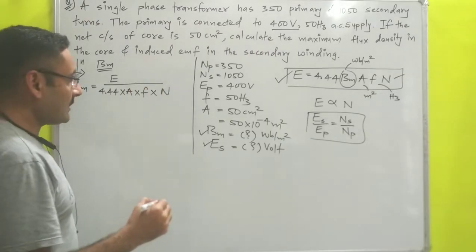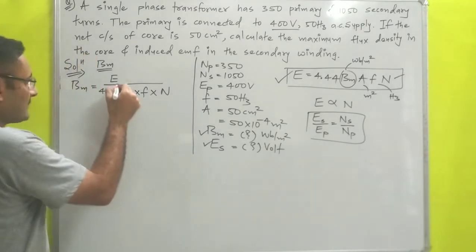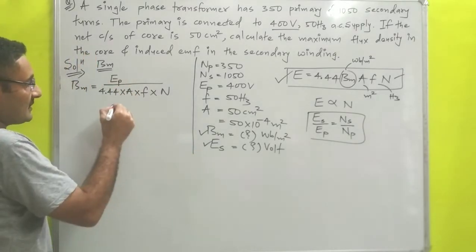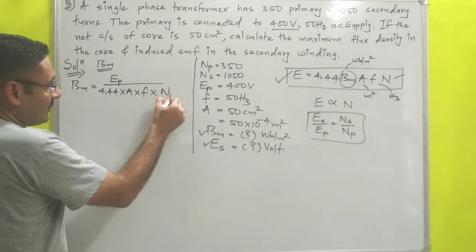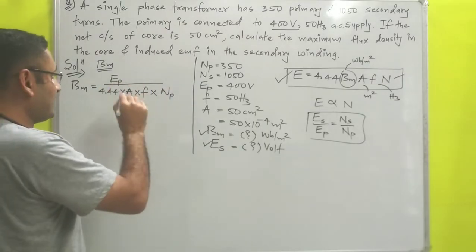Now we are talking about primary coil, so I will write potential of primary coil divided by number of turns for primary coil. You can find the same Bm with the help of secondary coil also.